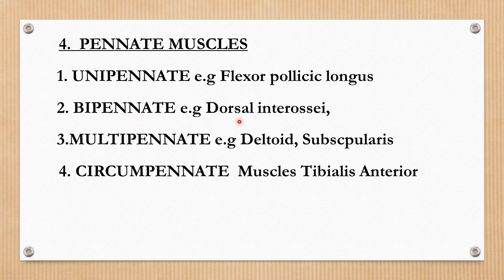If along the central tendon the fibers are arranged bilaterally, on each side, then these are known as bipinnate muscles, with the example being dorsal interossei. If multiple units of unipinnate and bipinnate are grouped together making a single muscle mass, then this is known as a multipinnate muscle. These muscles show more powerful contractions. Examples are the deltoid and subscapularis.